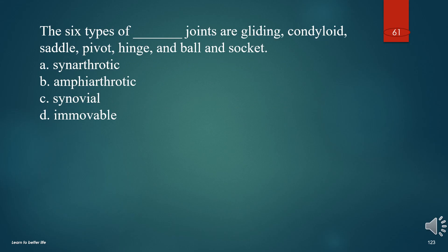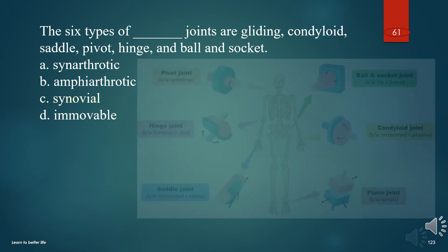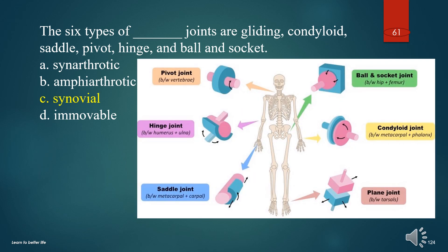The six types of what joints are gliding, condyloid, saddle, pivot, hinge, and ball and socket? A. Synarthrotic. B. Amphiarthrotic. C. Synovial. D. Immovable. The answer is C. Synovial.